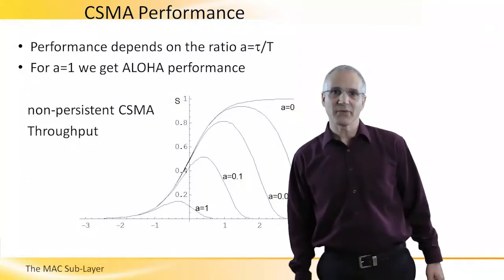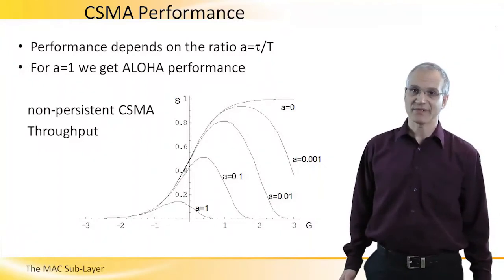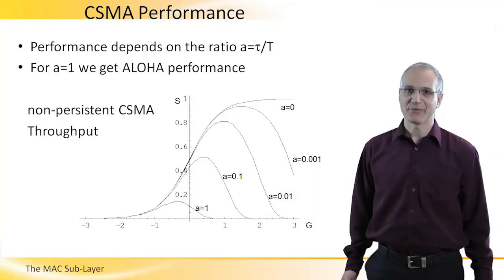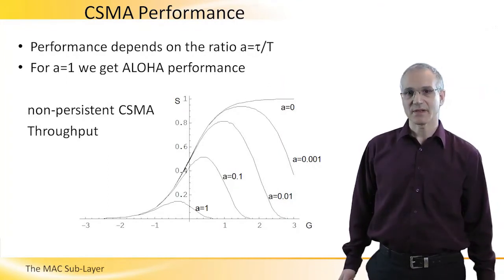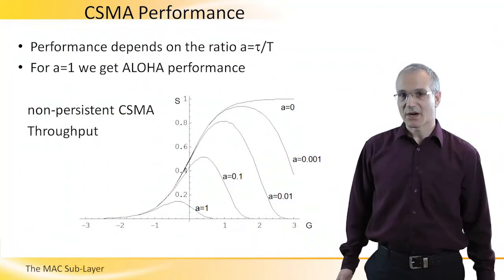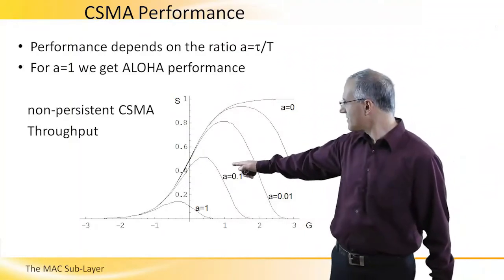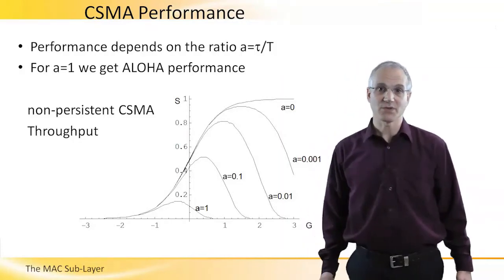So when we look at CSMA performance, it of course depends on the ratio between tau, the propagation delay, and T, the frame size. We call it A. For A equals 1, we get a low performance, of course, because we saved nothing by sensing the channel. However, what you can see here in a graph for non-persistent CSMA, as A becomes smaller and smaller, our maximum performance increases. So for A in the hundredths, you can see that performance can reach almost 80% of the capacity. And this is typical in the cases we showed before.